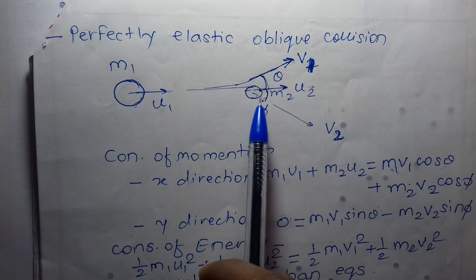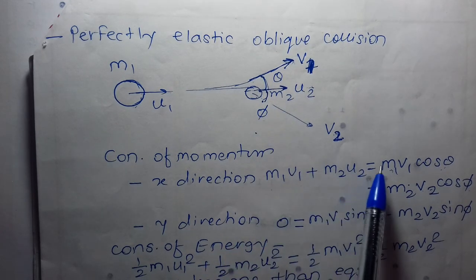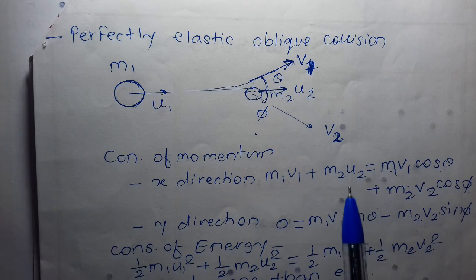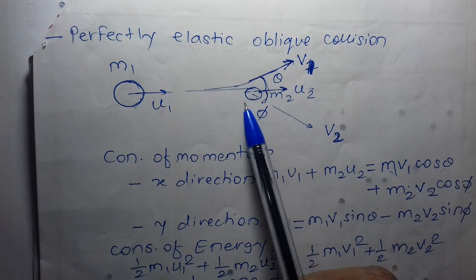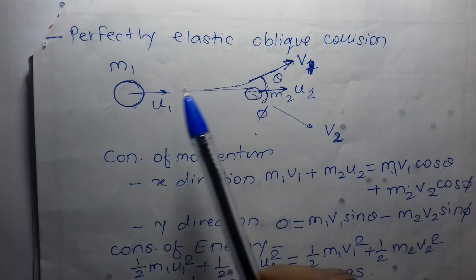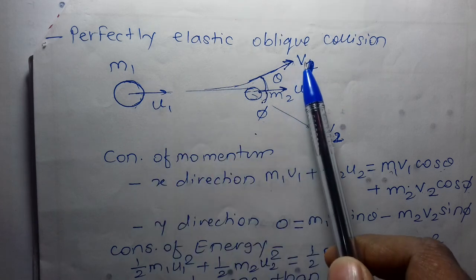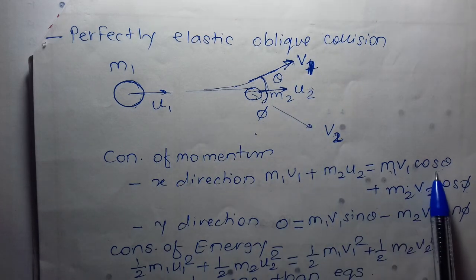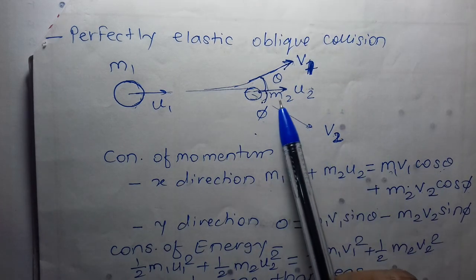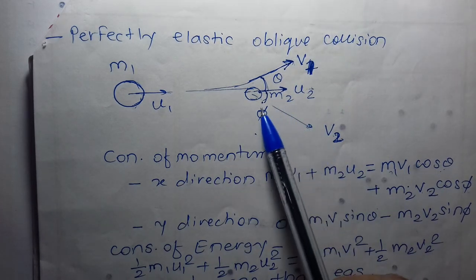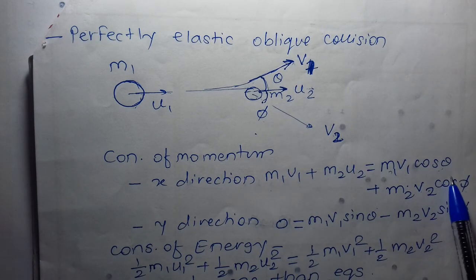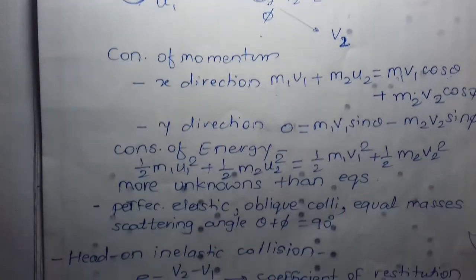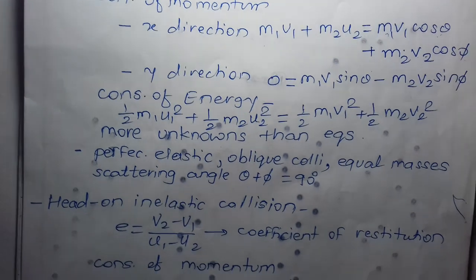For conservation of momentum in the x-direction: momentum of first mass is m1·u1, momentum of second mass is m2·u2. After collision: m1·v1·cosθ + m2·v2·cosφ. This is the conservation of momentum equation for the x-direction.